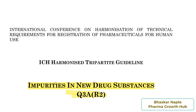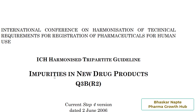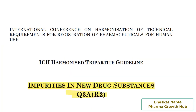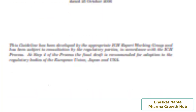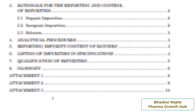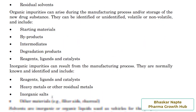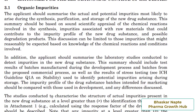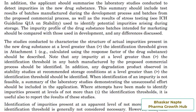I will walk you through the important information where you will be able to understand the digits after decimal points while reporting impurities for drug substances. In case you want to report impurities in drug products, you have to refer to ICH guideline Q3BR2. Let me take you to page number seven where I will explain the digits while reporting impurities.